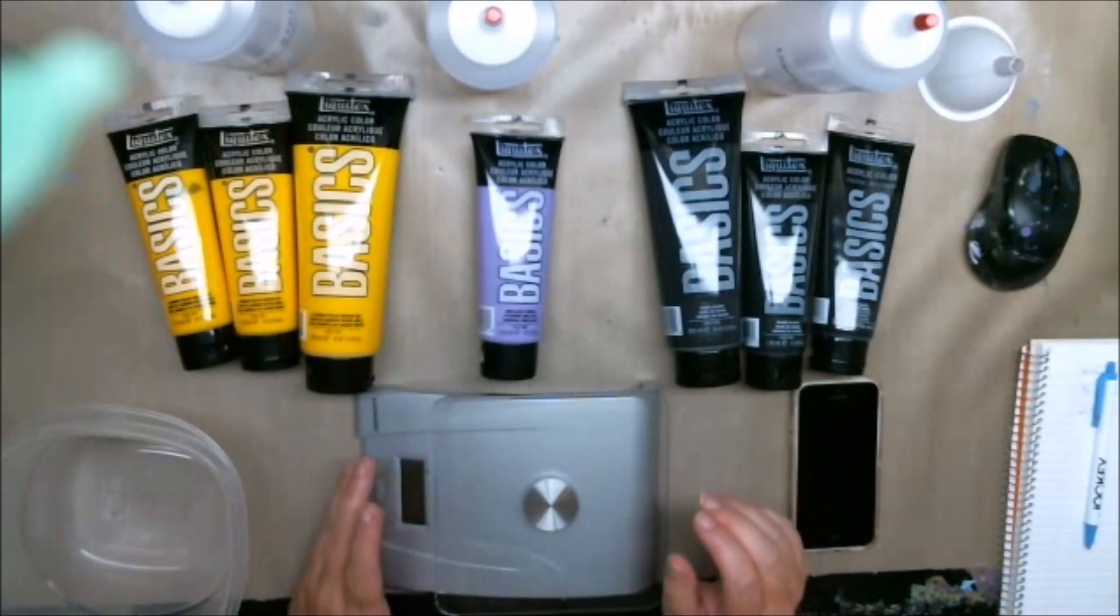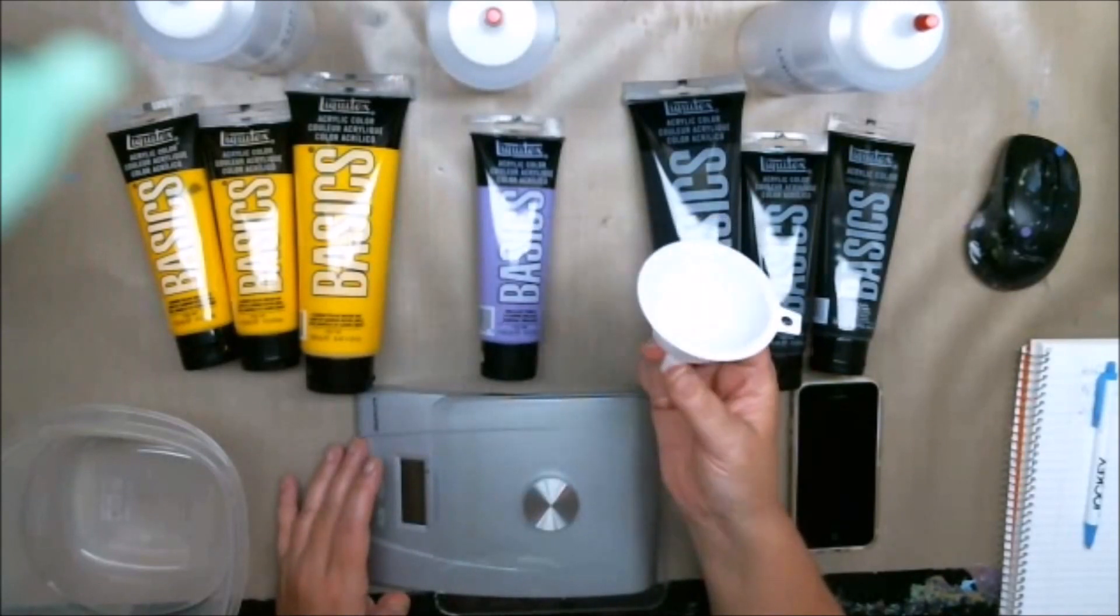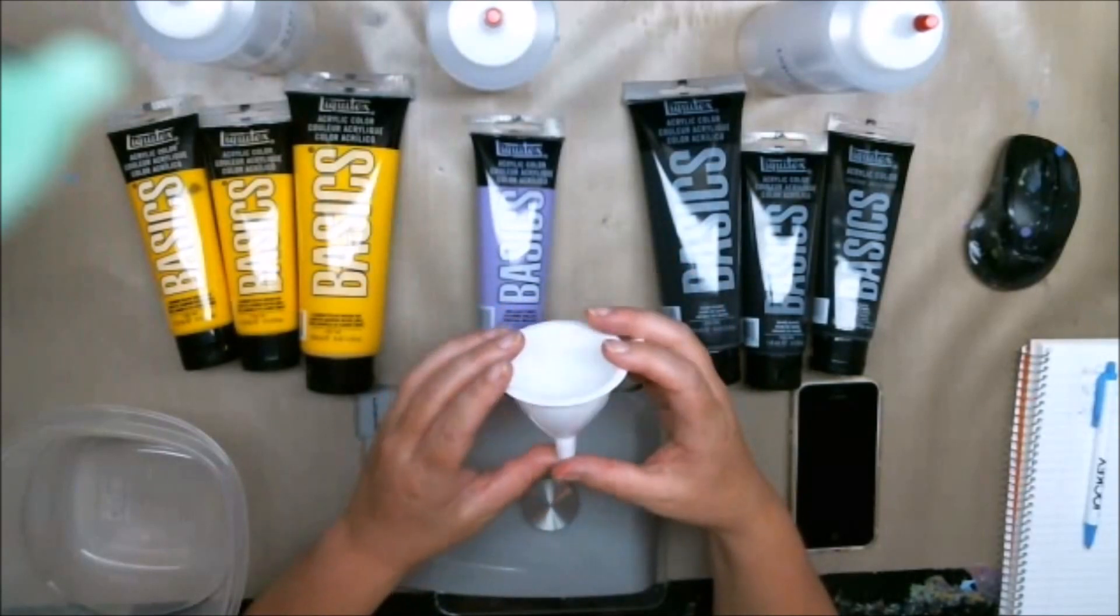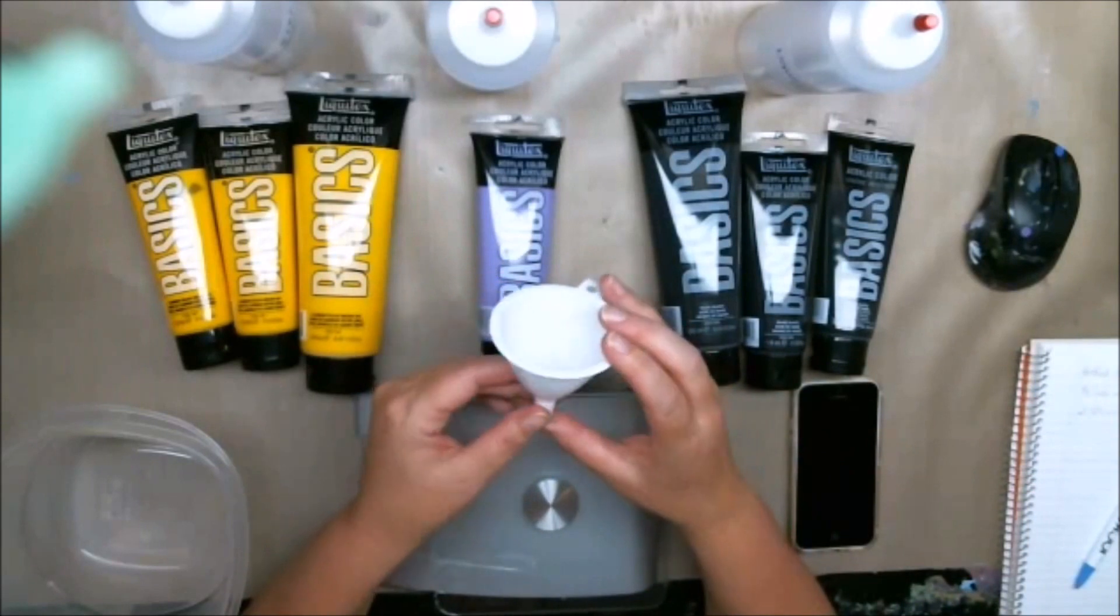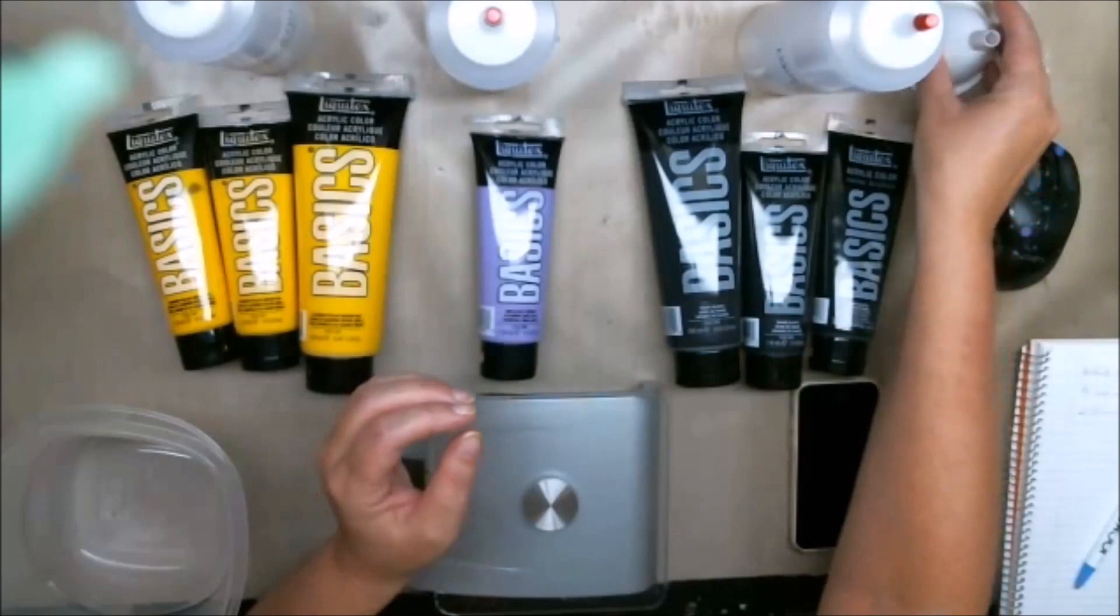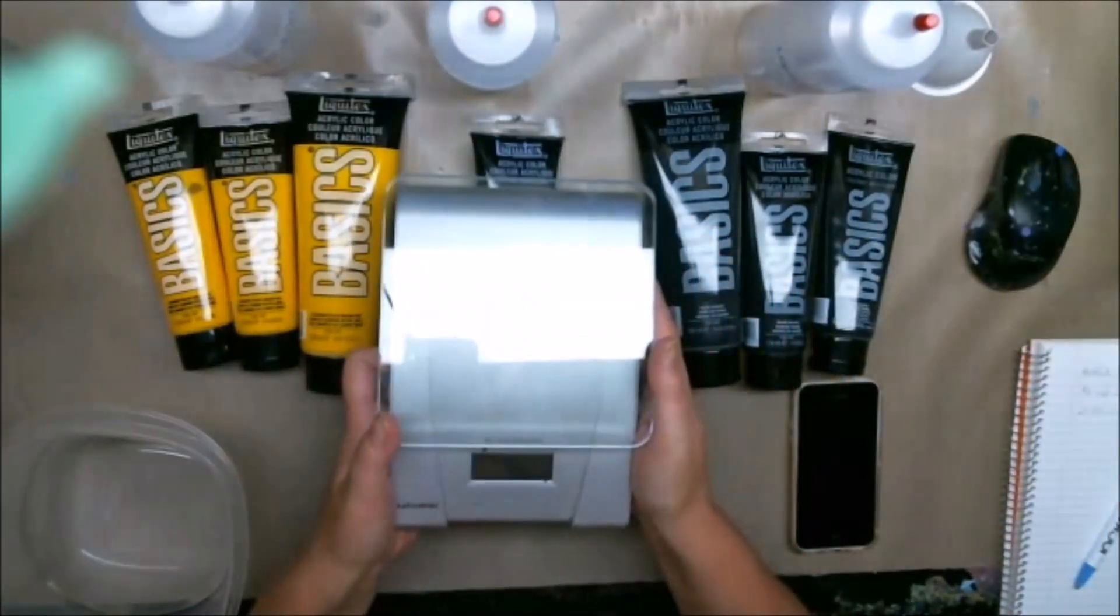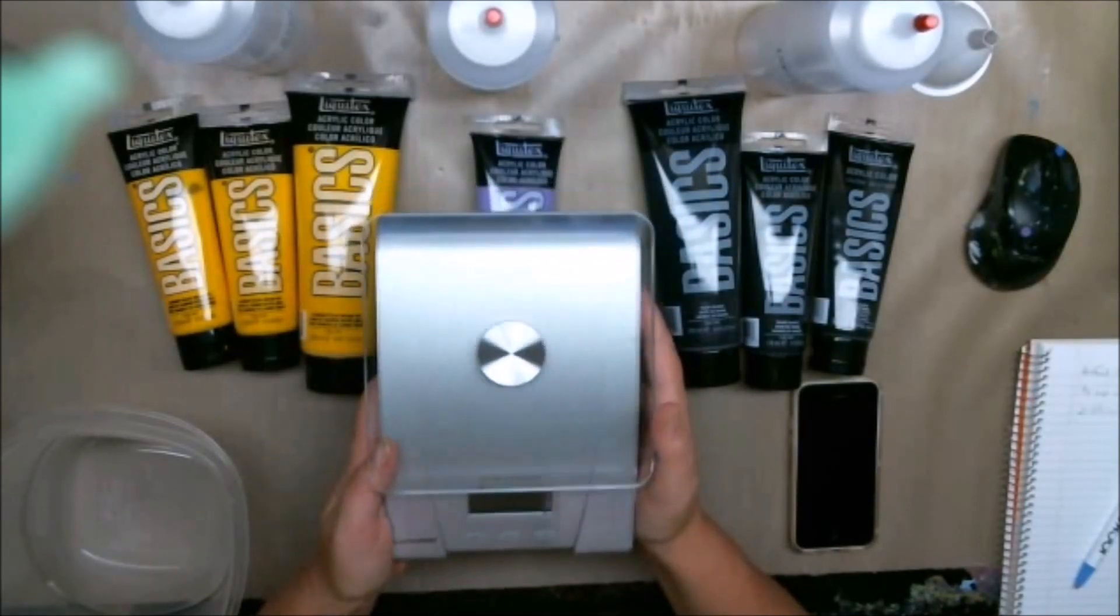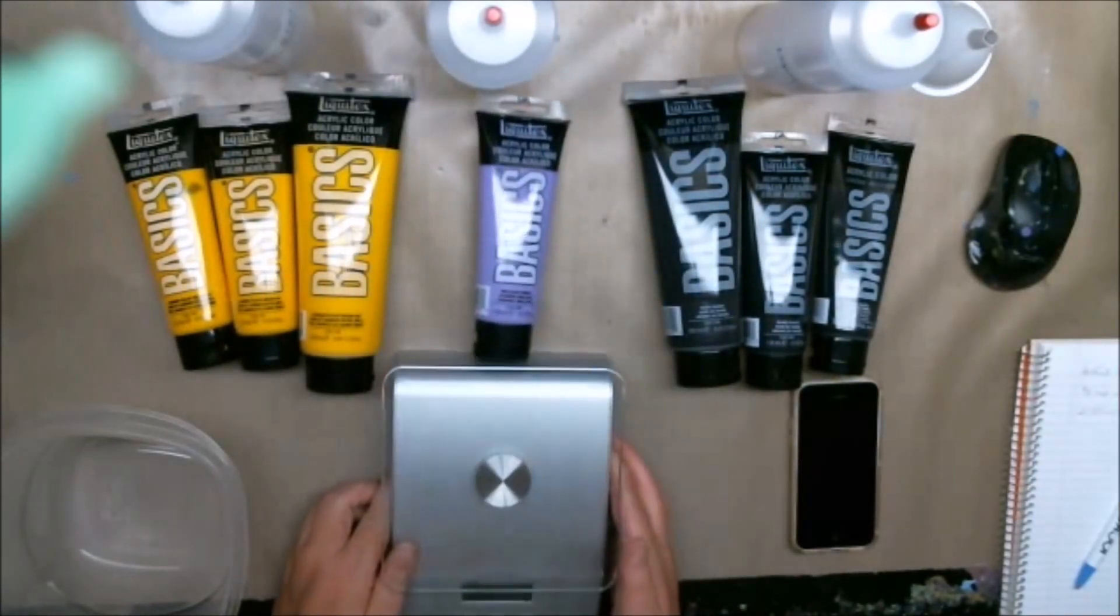You're going to need a funnel. This is for measuring the consistency, the viscosity of the paint. This particular funnel is a third of a cup or about three ounces or 75 milliliters, but you can use any size you want. Kitchen scale—one of the best ways of making sure that you have the same viscosity is to weigh the paint and weigh the water, so all of my stuff is weighed.